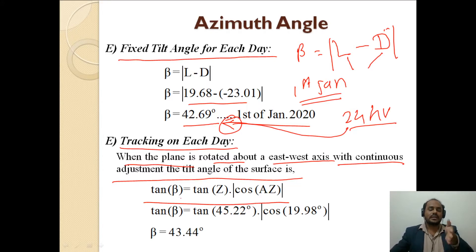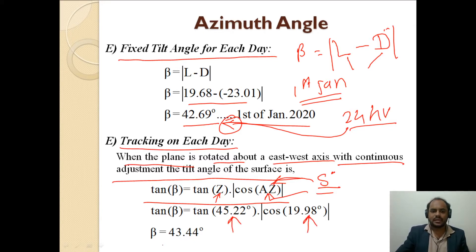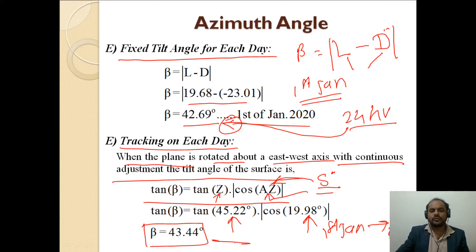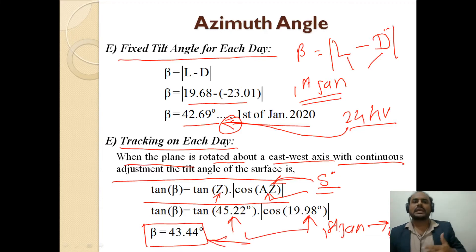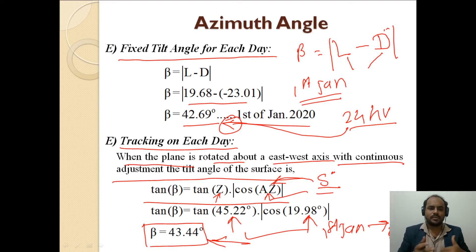For the tracking type of mechanism, where the plane is rotated about the east-west axis with continuous adjustment, the formula is: tan(β) = tan(zenith angle) × |cos(azimuth angle)|, where the azimuth is measured from true south. Substituting the zenith angle of 45.22° and azimuth of 19.98°, we get a tracking tilt angle of 43.44° for January 1st at 1 p.m. So we can use either the fixed tilt angle method or the tracking method depending on our system requirements.